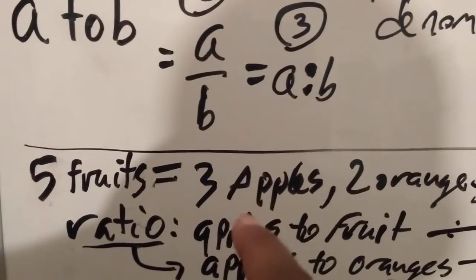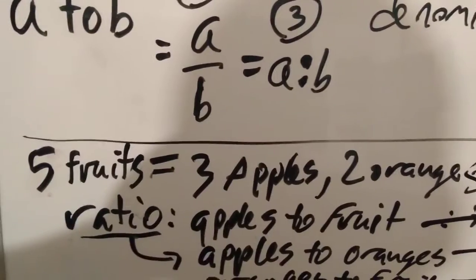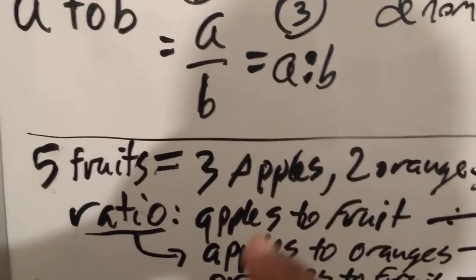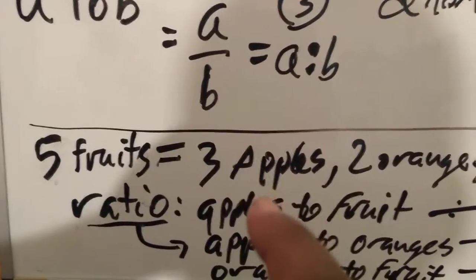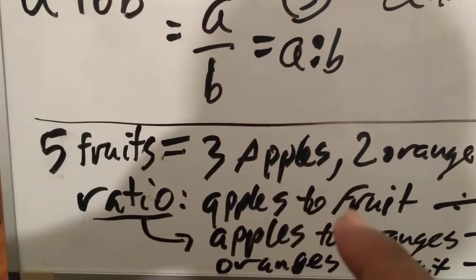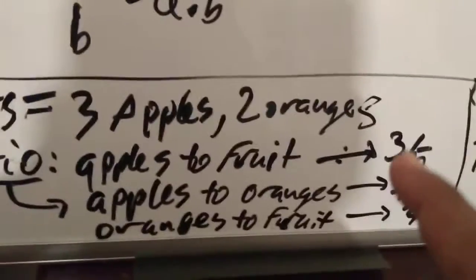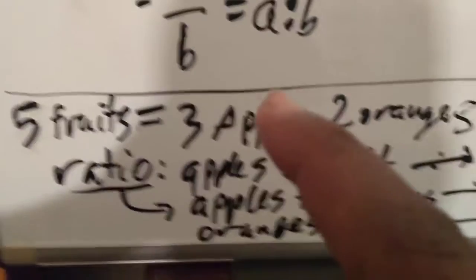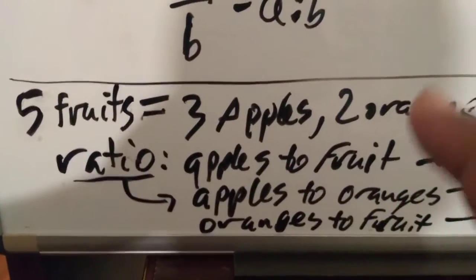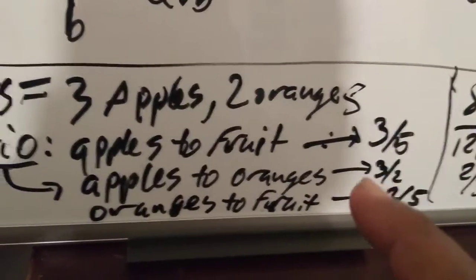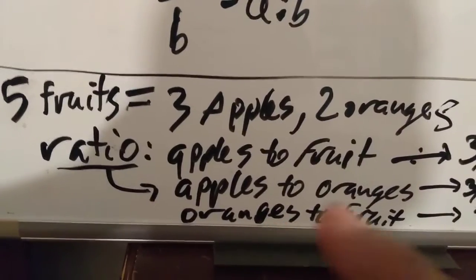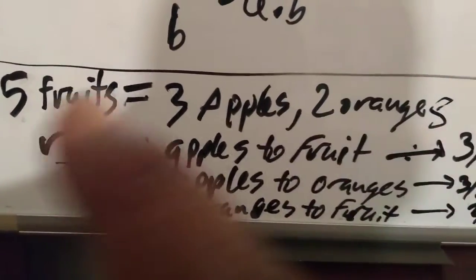Well, there were three apples out of the five fruits. So, apples to fruit would be three over five or three to five. Apples to oranges would be three over two. And then oranges to fruit would be two over five.